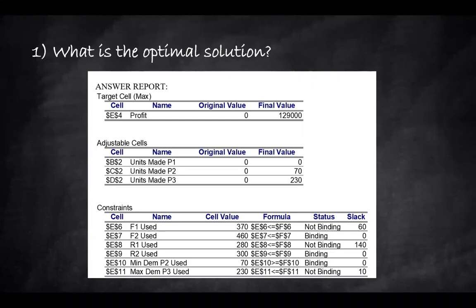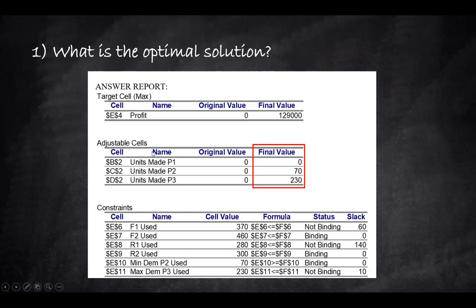One question, for example: what is the optimal solution? When we talk about the optimal solution, we're looking at the final value in the answer report. We can see that P1 will have zero units, P2 will have 70 units, and P3 will have 230 units. This is our optimal point. The final value — in this case the profit — is $129,000.